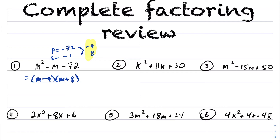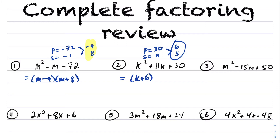As we go through the questions, I encourage you to pause the video, try the question yourself, and then see my solution. Work along with me. Same idea with this one — the leading coefficient is 1, another simple trinomial using product sum. My product is 30 and my sum is 11. Two numbers that multiply to be 30 and add to be 11 are 6 and 5. So this factors into k plus 6 times k plus 5.